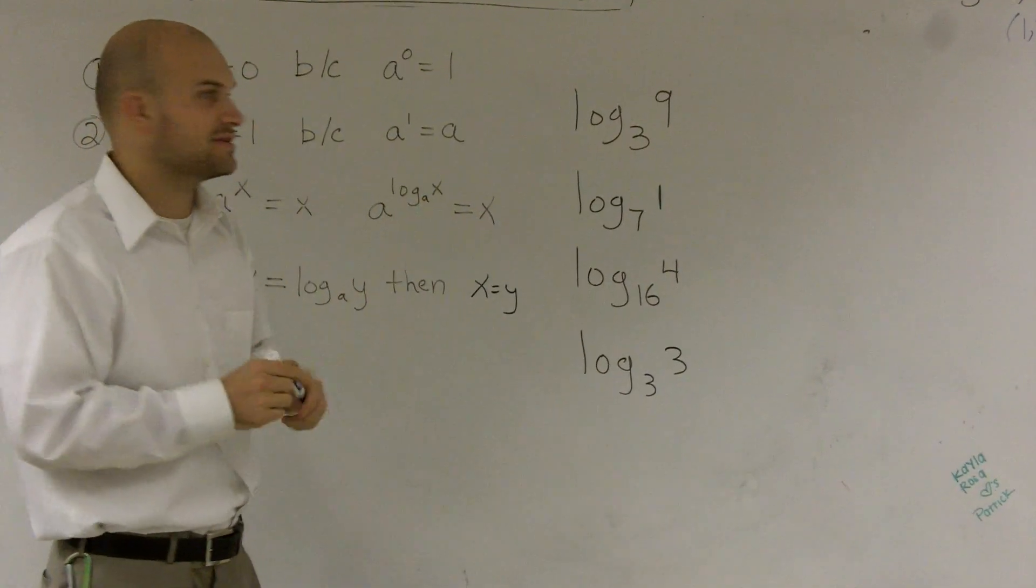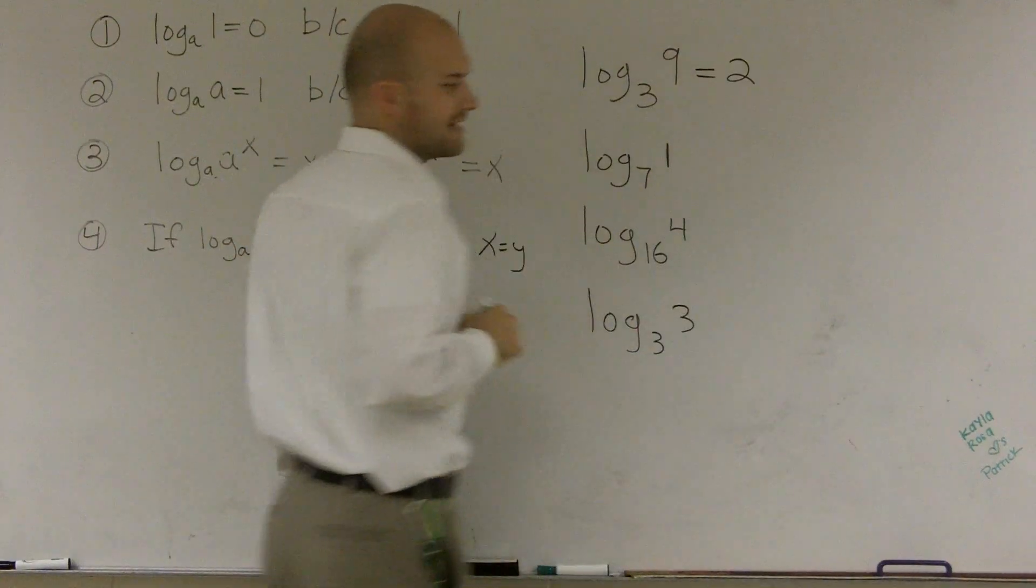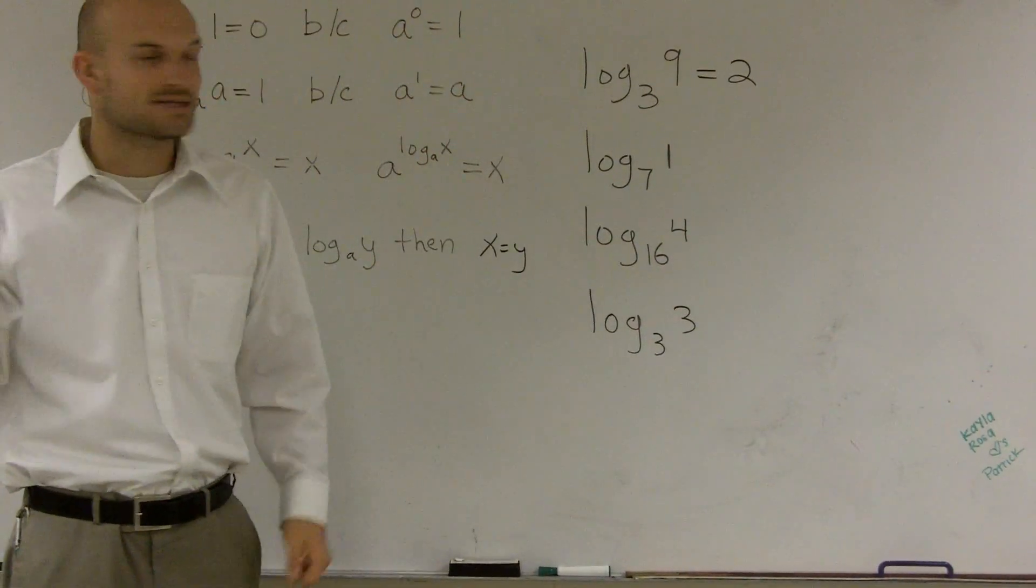The answer to that is obviously 2. Log base 3 of 9 is 2, because I can multiply 3 by itself twice to get me 9.